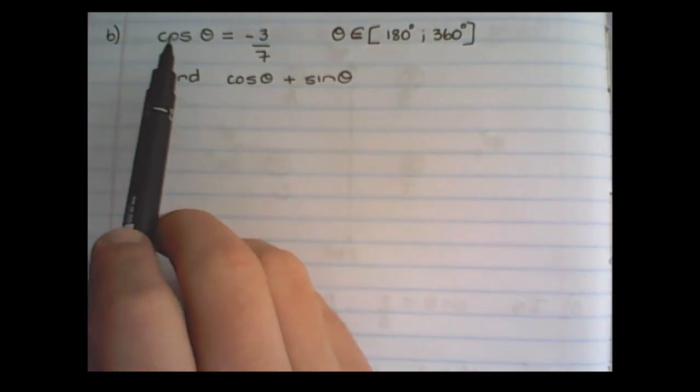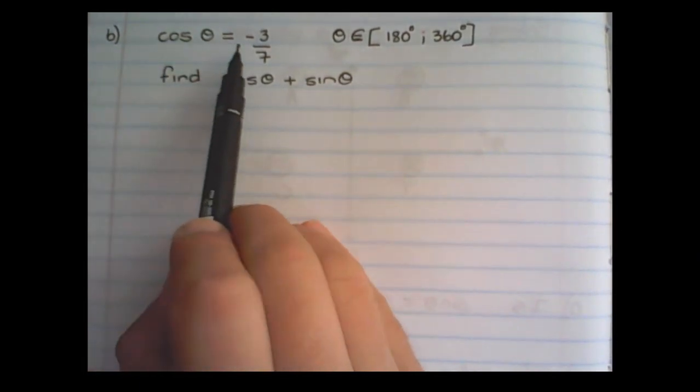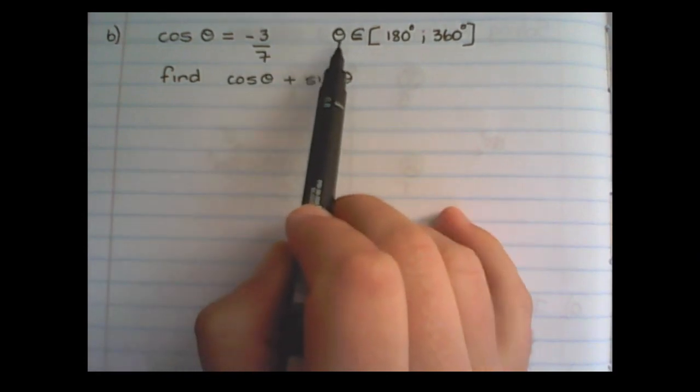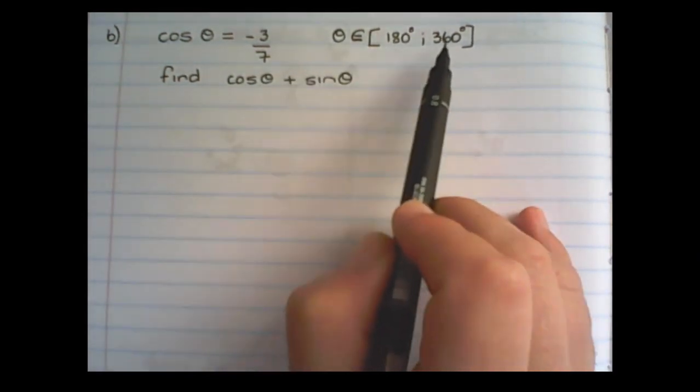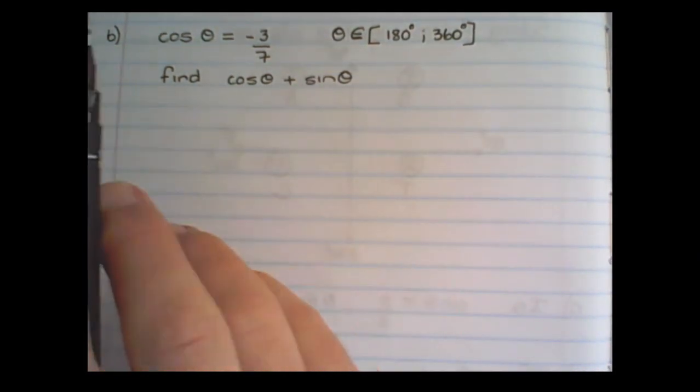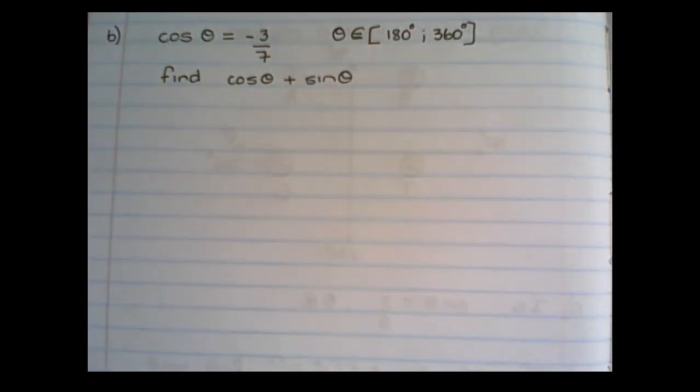Our second example. Cos θ is equal to negative 3 over 7. θ is restricted between 180 and 360 degrees. And we want to find cos θ plus sin θ without a calculator.